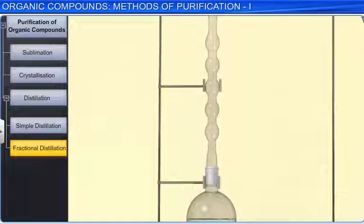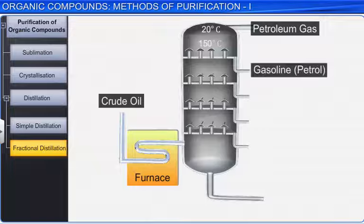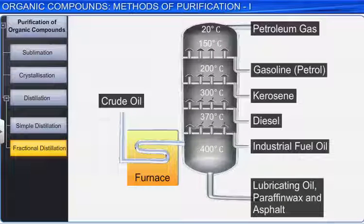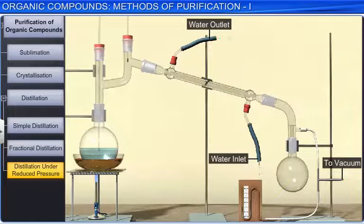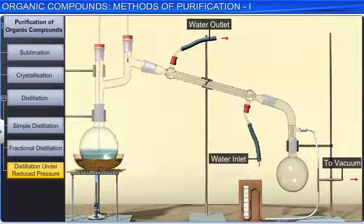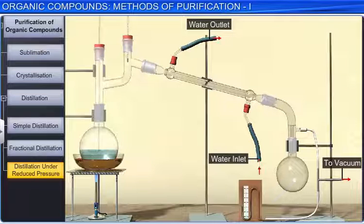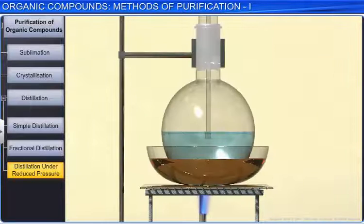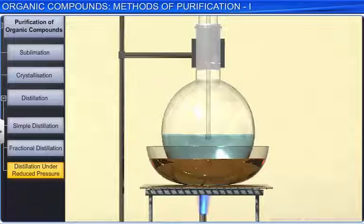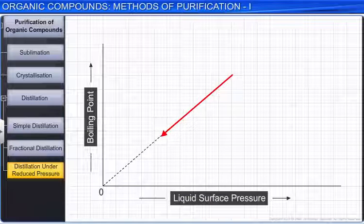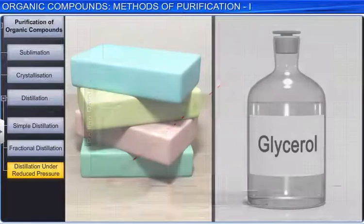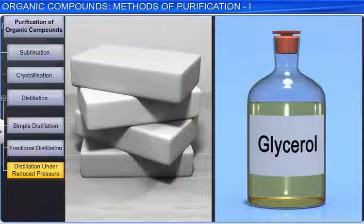The technique of fractional distillation is used in the separation of different fractions of crude oil in the petroleum industry. In the case of liquids with very high boiling points and liquids that decompose below or at their boiling points, another method called distillation under reduced pressure is used for purification. In this method, the pressure on the liquids is reduced with the help of a water pump or a vacuum pump. A liquid starts to boil when its vapor pressure becomes equal to the external pressure. Thus, reducing the pressure on the liquid surface reduces the boiling point of the liquid. In soap industries, glycerol is separated from spent lye using this method.